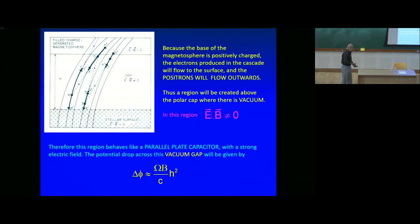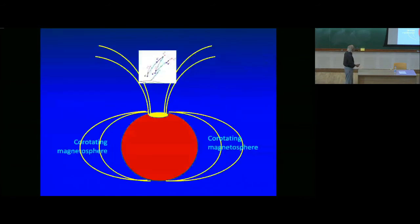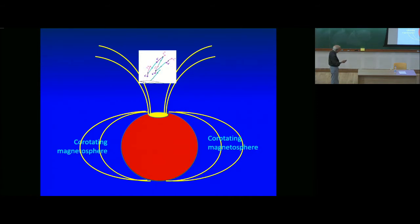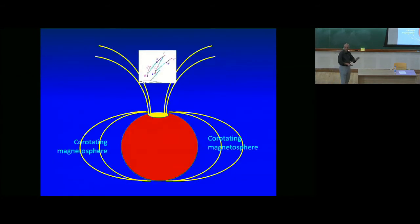Charges of one species go towards the surface while charges of the other polarity go out—there will be a relativistic wind from a neutron star. To summarize: field lines that close inside the light cylinder form the co-rotating magnetosphere, and outside there is a cascade of electron-positron pair production in the presence of a magnetic field, and that is how radio radiation from pulsars is produced.